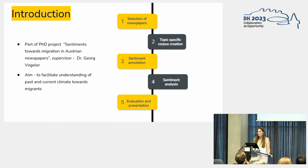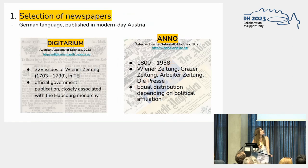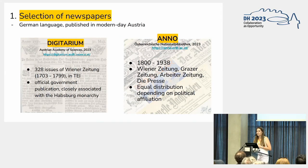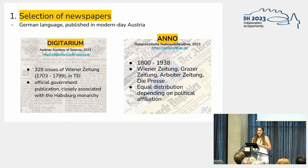Since I'm mainly interested in sentiments towards migration, I also want to create a smaller migration-specific corpus. Regarding the selection of newspapers, I had some preliminary criteria. The first was that all newspapers I want to look at are in German and published in modern-day Austria — cities like Vienna, Graz, or Salzburg. The time frame I'm looking at is from the 18th to the 20th century, until 1938, comprising two publicly available corpora: the DIGITARIUM, made available by the Austrian Academy of Sciences, and the ANNO Corpus by the Austrian National Library.